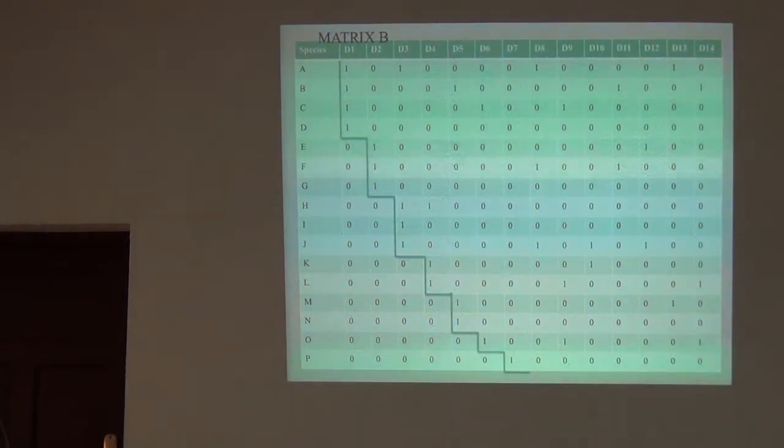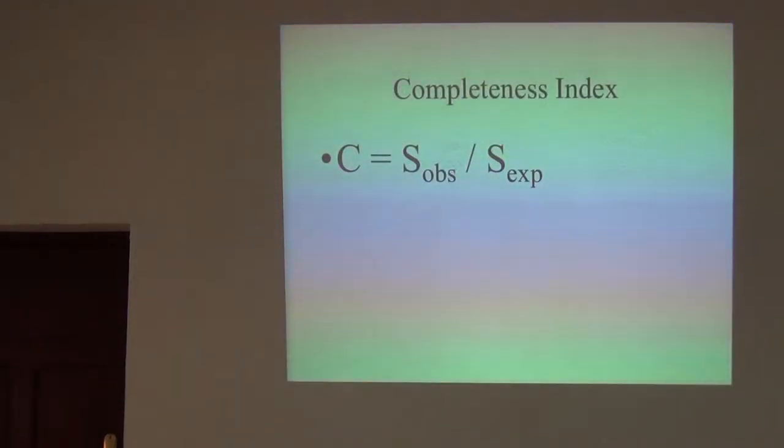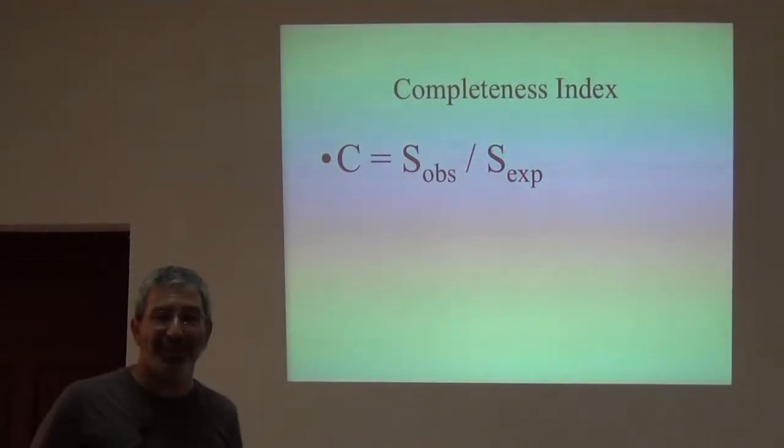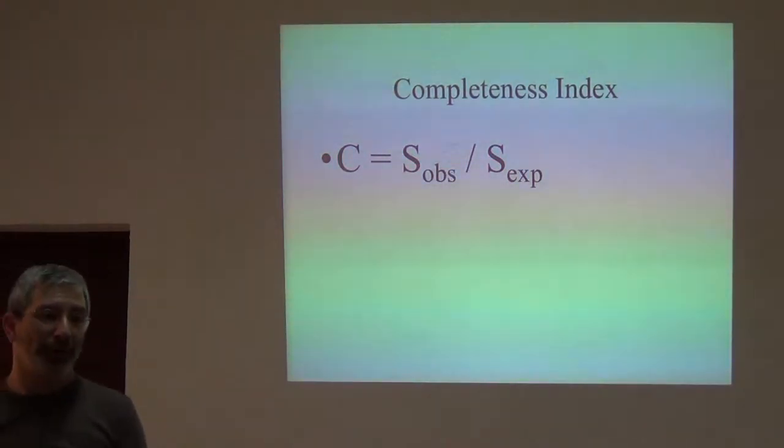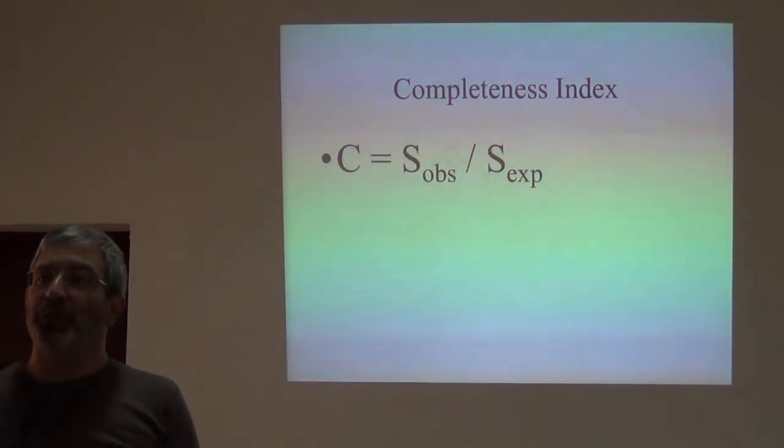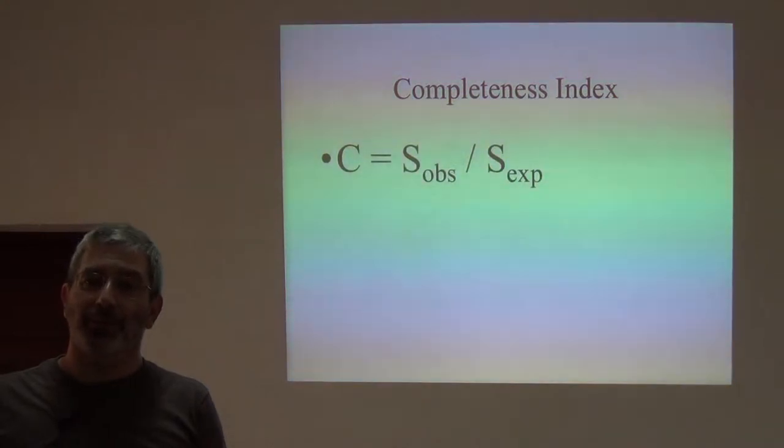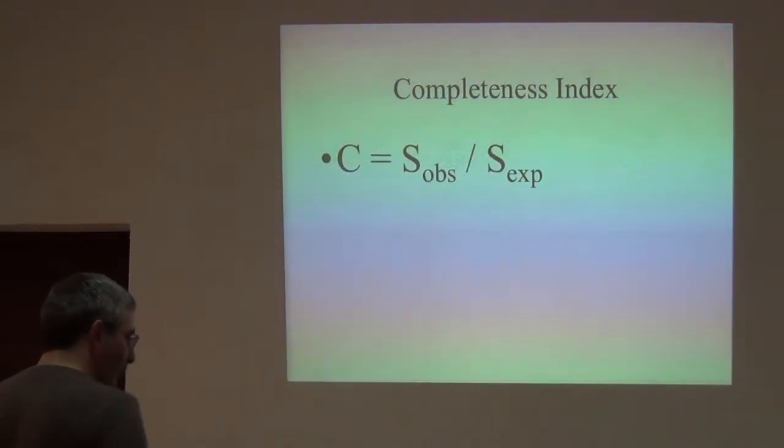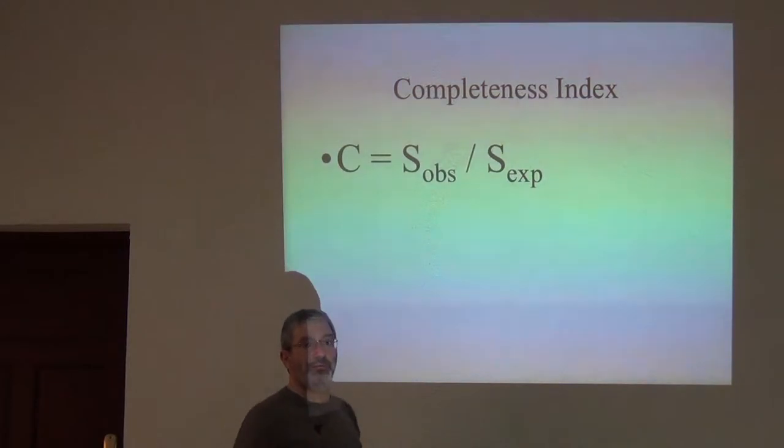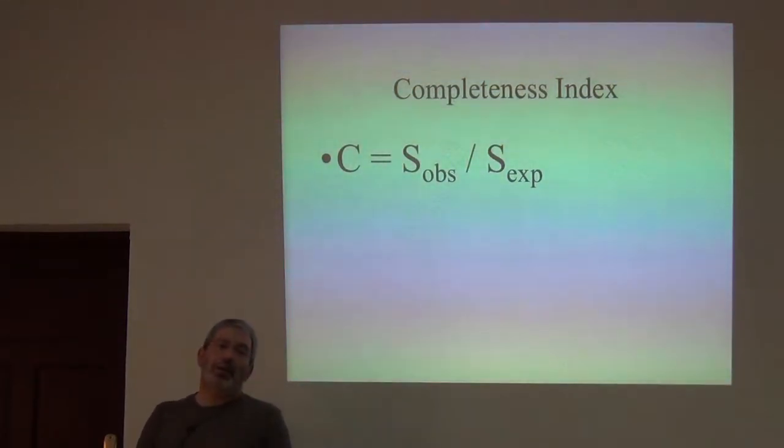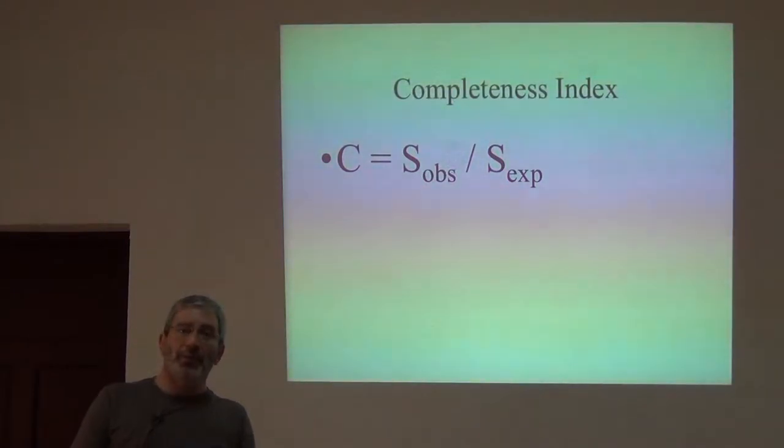Here that's probably correct and here it's probably wrong and it's wrong by 15% something like that. So that number C, that quantity which will range between 0 and 1, it'll be 0 if you have a large fauna and you have recorded very few of the species and it'll be 1 like in matrix A if that second term of the equation goes to 0.